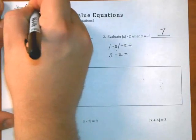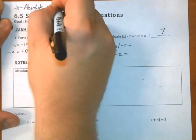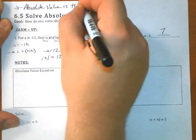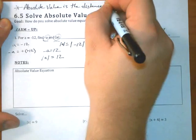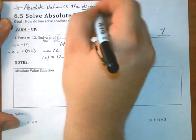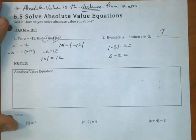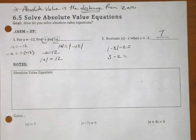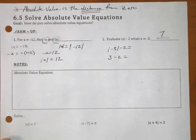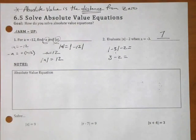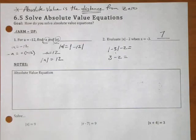Absolute value is the distance from zero. If we keep in mind that absolute value is a distance, then the rest of this stuff should make sense. But if we don't keep coming back to the idea that absolute value is distance, then the rest of this is going to be like, where does this come from? Why are we doing this? It all comes back to this absolute value idea. Anything that's in an absolute value symbol is a distance.